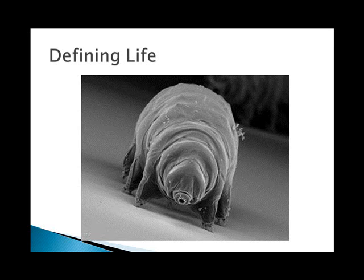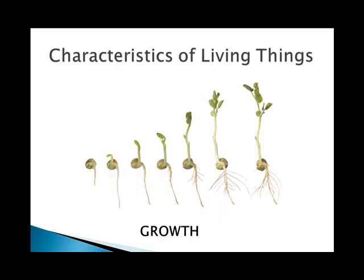Living things exhibit a certain set of characteristics, but not all living things show all of them, and that's kind of a big debate in biology. The first characteristic is that living things show growth, which means adding more cells or more mass to the one cell that they have, depending on the organism we're talking about.